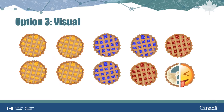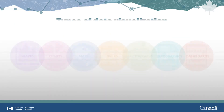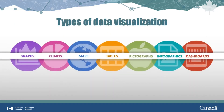A third way to present the results of our pie survey is without many words or numbers at all. This is where data visualization comes in. From this picture, it's instantly clear that apple pie is the most popular. There are many different ways of presenting data visually, such as graphs, charts, maps, tables, pictographs, infographics, and dashboards. On the next few slides, we'll look at what each one is best at showing.